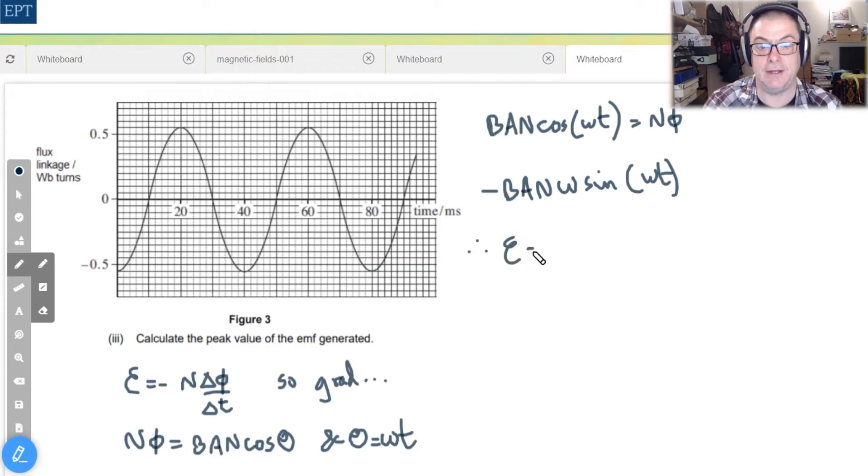Therefore we can say that the EMF is actually going to be equal to B A N ω sine ωt and we've dropped the minus sign because our Faraday's law already has a minus sign in front of it.